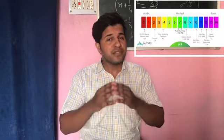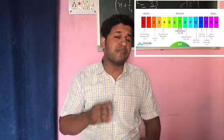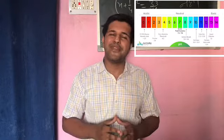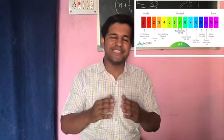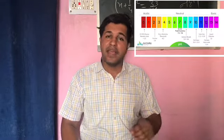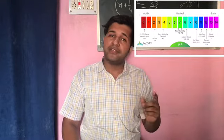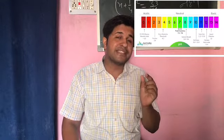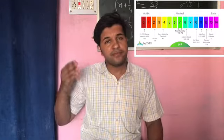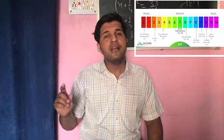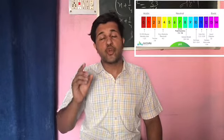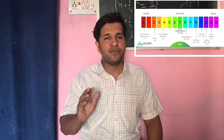And if the substance has a value greater than 7, then the substance is known as the basic substance. At 0, the strongest acids are found. At 14, the strongest base is found.